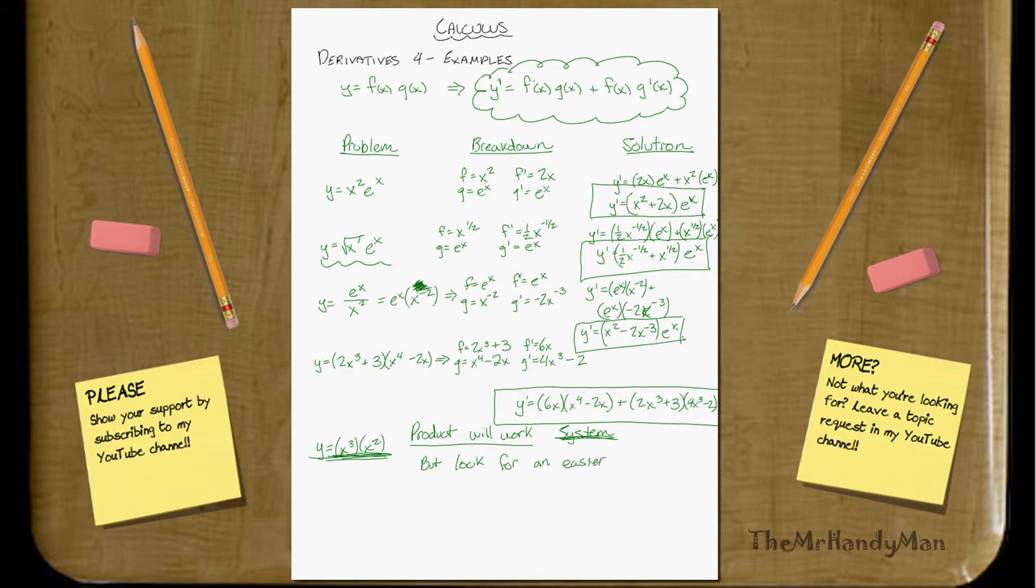The biggest thing with math is, you always need to be looking out for an easier way to simplify things, make life easier for you. So notice that with this, y can just be simplified down to x to the 5th power, which we can just punch out real quick as 5x to the 4th power. Really simple and quick. You just got to keep an eye out for that kind of stuff. It's the same in calculus as it was in algebra.